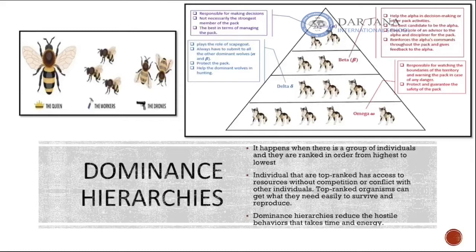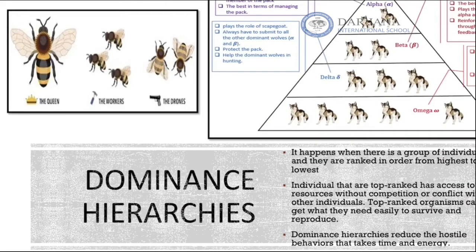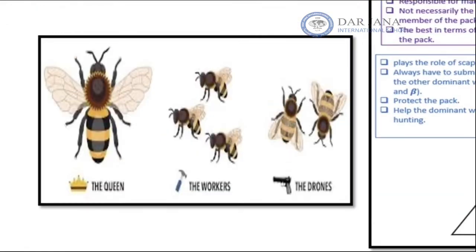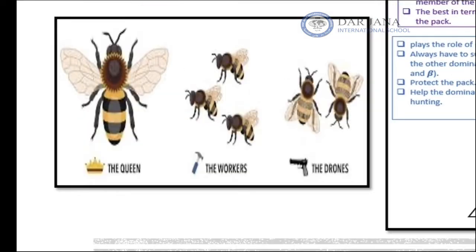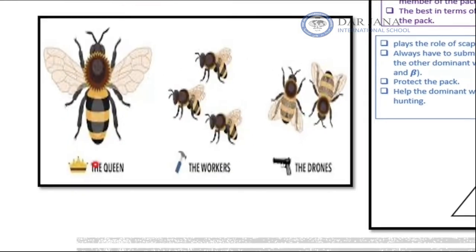The second type is dominance hierarchies. Some individuals found in nature are grouped and ranked from highest to lowest importance. For example, in beehives, bees are divided into different ranks. The queen is the reproducing female and is ranked at the highest importance.